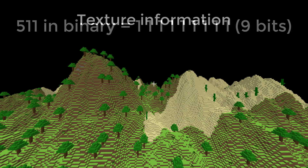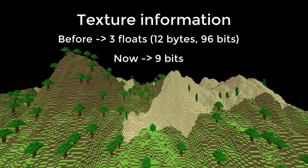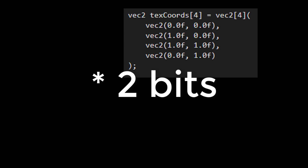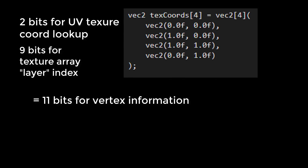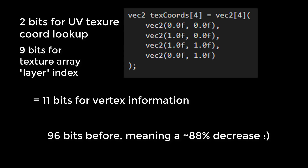I just realised I made a mistake there — there are actually an additional 3 bits needed per vertex to tell OpenGL which texture coordinate to use, since they are now defined in the vertex shader. So per vertex the texture coordinates are being stored in 12 bits, not 9 bits. But even so, that's still a pretty good decrease!